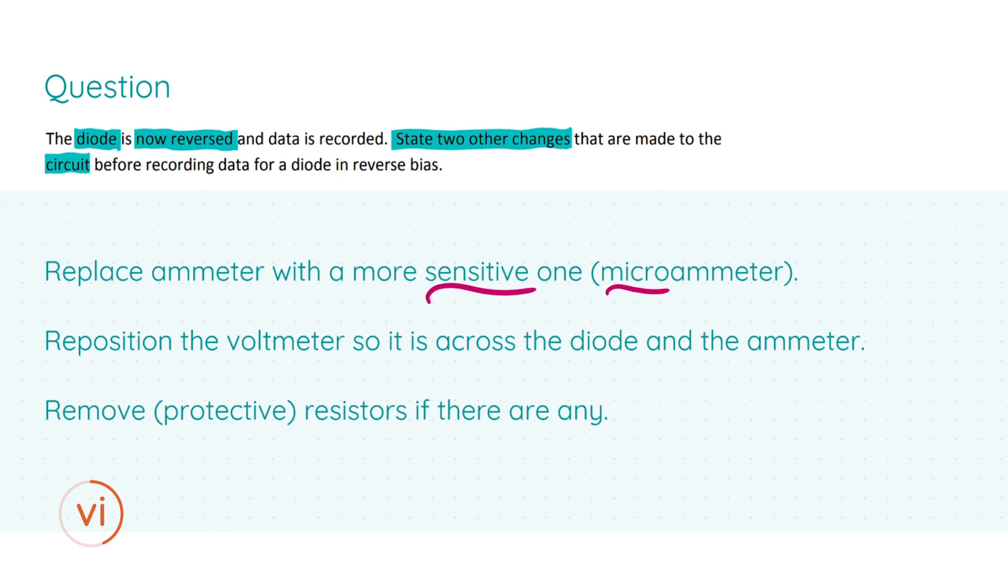The second change is to reposition the voltmeter so it is across the diode and the ammeter. The reason we do this is the ammeter in the circuit diagram reads the sum of the current through the voltmeter and the diode. Resistance on the voltmeter is huge and therefore takes almost no current, so the reading on the ammeter is the current through the diode with a high degree of accuracy. However, since now the diode is in reverse bias, it has a very high resistance and therefore the current through the diode and the voltmeter may be similar in size, so it will not be as accurate.